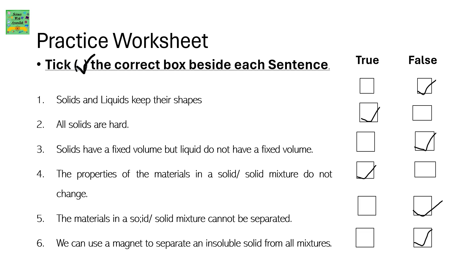The materials in a solid or solid mixture cannot be separated — it's false. It can be separated by different methods. We can use a magnet to separate an insoluble solid from all mixtures — it's false. It depends on whether that solid is magnetic or not, so not all can be separated.